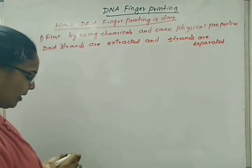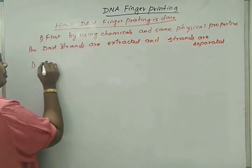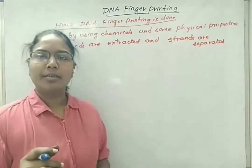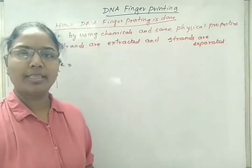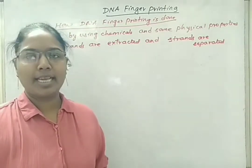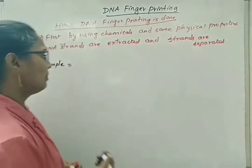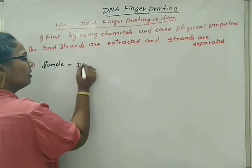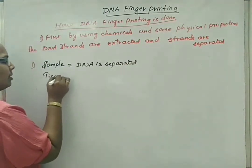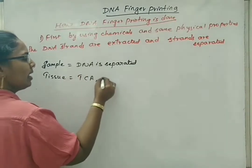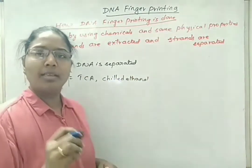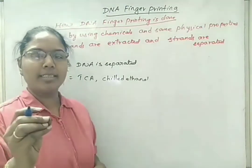The first step in DNA fingerprinting: if a tissue or sample is available, the DNA strands are separated using a method we know from biotechnology. We grind the tissue, add trichloroacetic acid, and separate DNA by the method of spooling by adding chilled ethanol on the test tube. Even if only a small sample like hair is available, we can still use these chemicals and separate DNA by the spooling method.